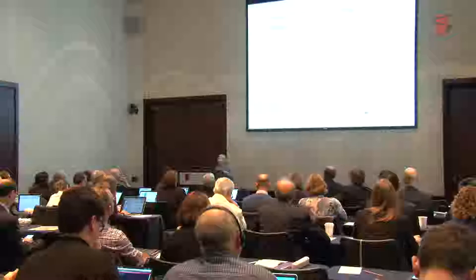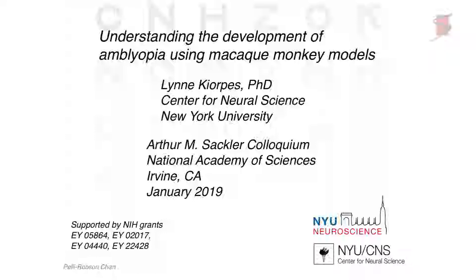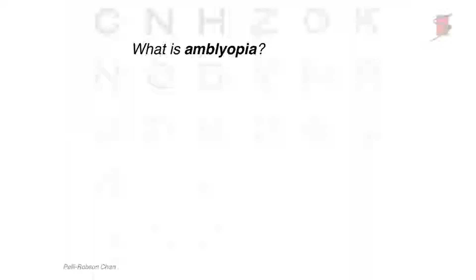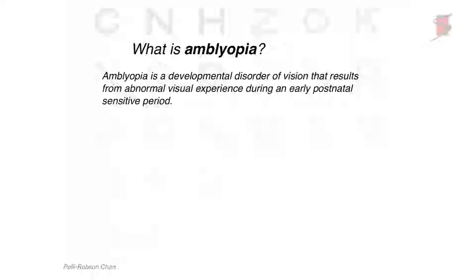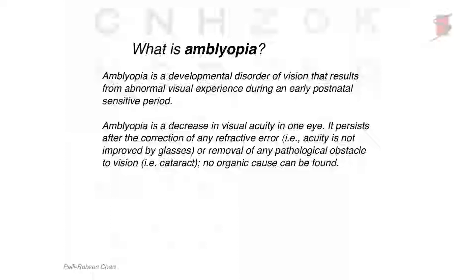I'm really excited to be here talking to you about some of the work on visual development and amblyopia. Amblyopia is a developmental disorder of vision, and it results from abnormal visual experience during an early critical period. Functionally, it's a decrease in visual acuity. Clinically, it's diagnosed as a decrease in visual acuity in one eye. That loss of acuity can't be corrected by putting on glasses or removing a cataract — the loss in vision persists. So it's not a structural problem; it's a functional problem of the brain.